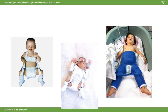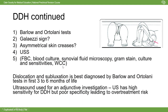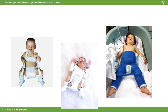Treatment for DDH begins with watchful waiting for three weeks, followed by a Pavlik harness as first-line intervention. A spica cast is used as third or fourth line treatment. The Pavlik harness gradually repositions the femoral head into the acetabulum.